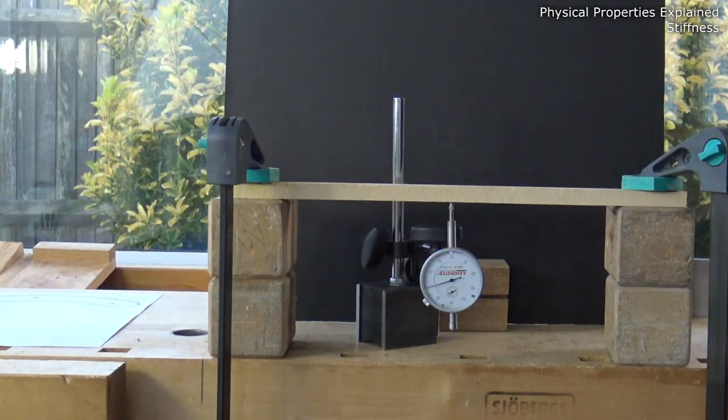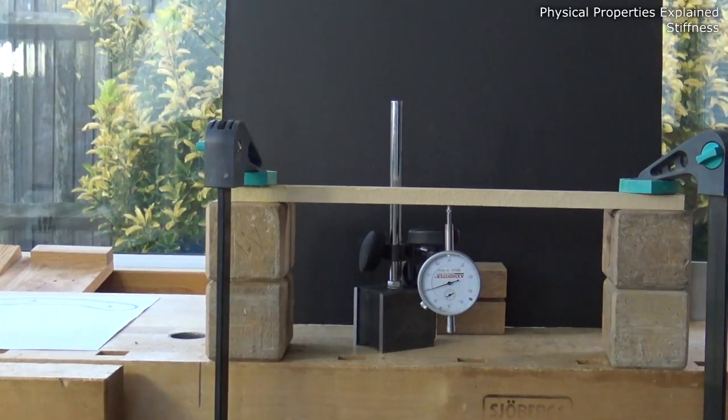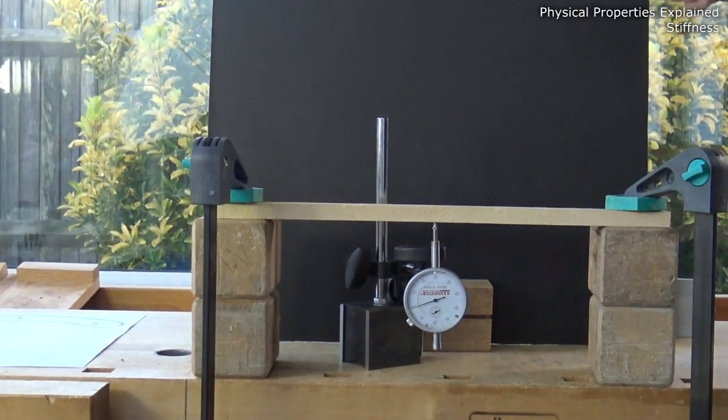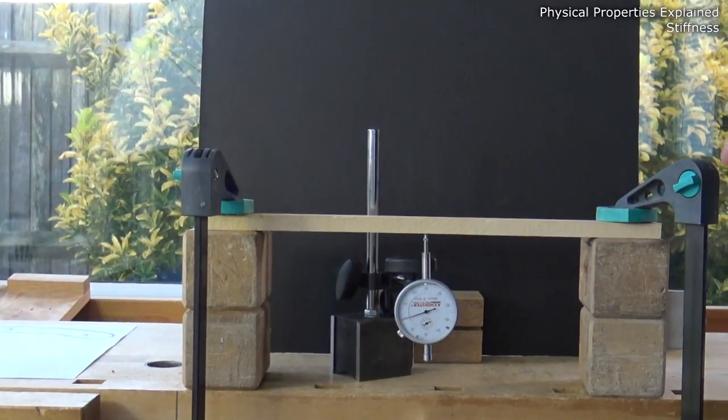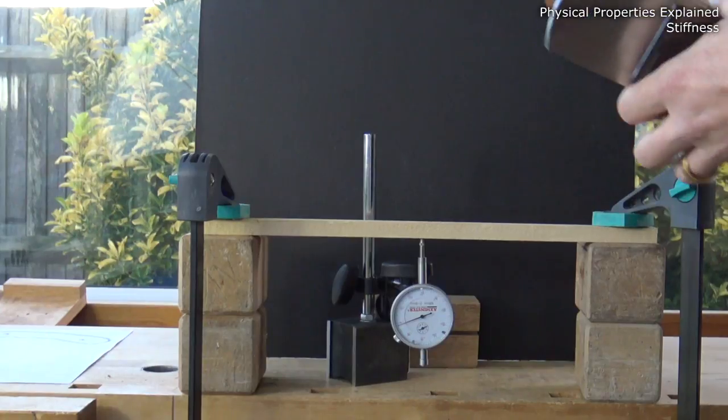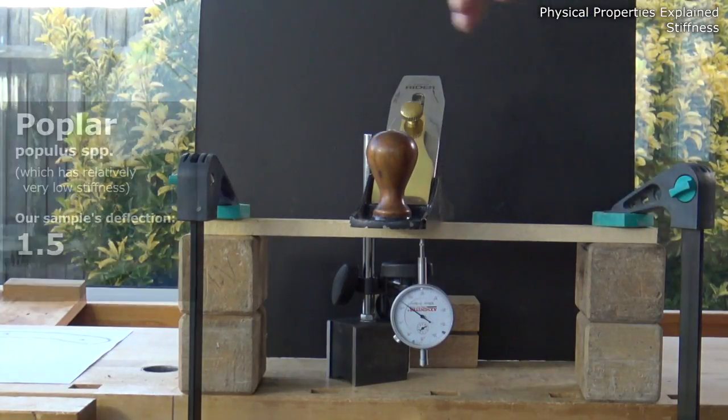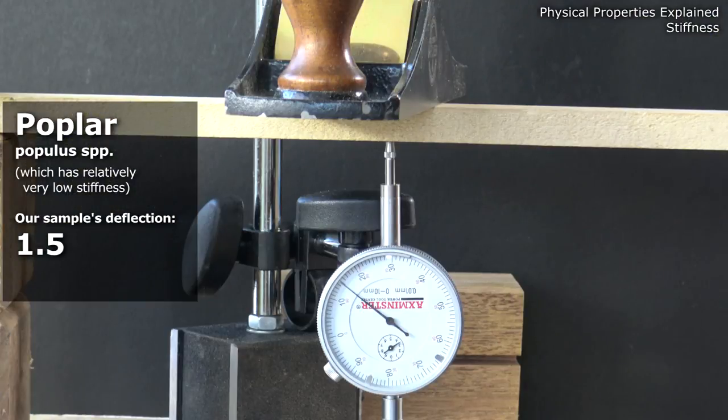Now I've got a number of other pieces here, they're all the same dimensions, so this test will be a comparative one. We can look at the amount of deflection that each sample gets for a given weight. And my given weight of choice this time is a number 4 plane. So for this sample, which is Poplar, the deflection there is 1.5mm.